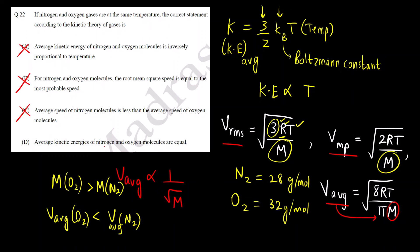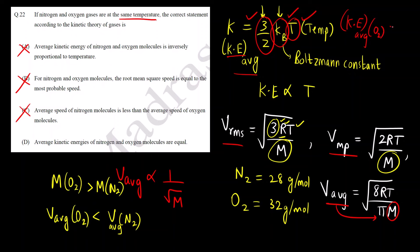Last option D: average kinetic energies of nitrogen and oxygen are equal. The formula is K = (3/2) Kb·T — 3/2 is constant, Kb is constant, and temperature is also constant, as it is given in the question that both gases are at the same temperature. So this is going to be the correct option: the average kinetic energy of oxygen equals that of nitrogen. The correct answer is option D.